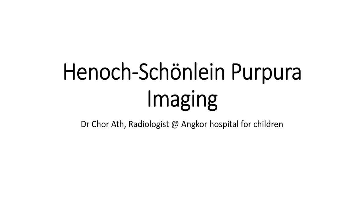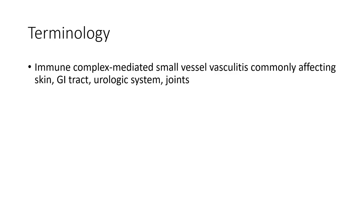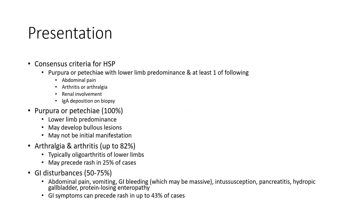Hello everyone. Today I'm going to show you about Henoch-Schönlein Purpura (HSP) short-lecture corpus imaging. This condition is an immune complex mediated small vessel vasculitis commonly affecting the skin, GI tract, neurologic system, and lungs at presentation.